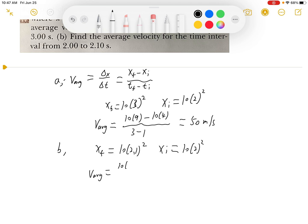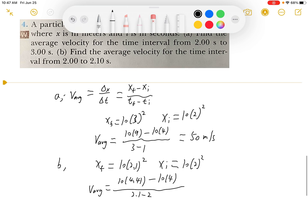Okay, so this will be 2.1 times 2.1. So this will be 4.41 minus 10 times 4 over 2.1 minus 2. Oops, here should be 2.